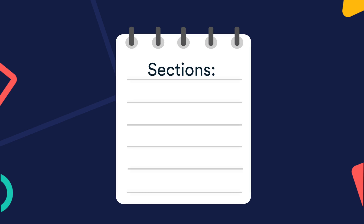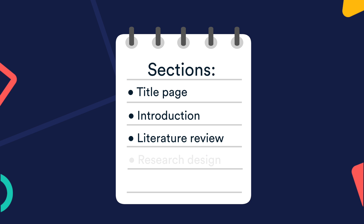The format of a research proposal varies between fields, but most proposals should contain at least these elements: a title page, introduction, literature review, research design, and reference list. Now let's go through what you should include in each element.